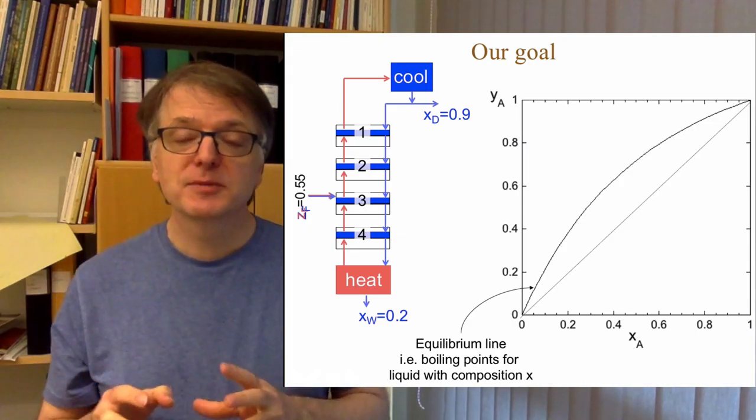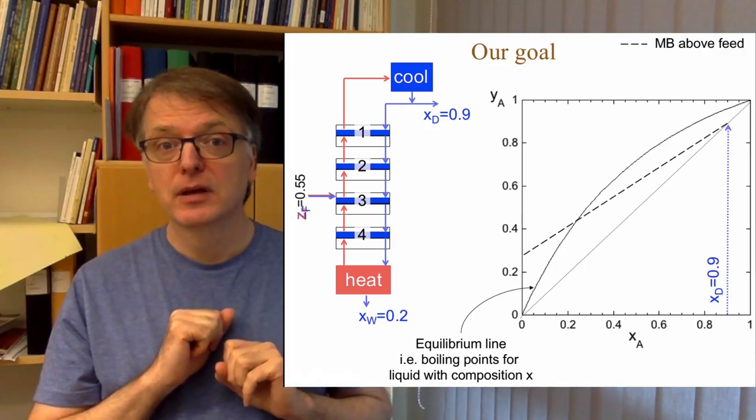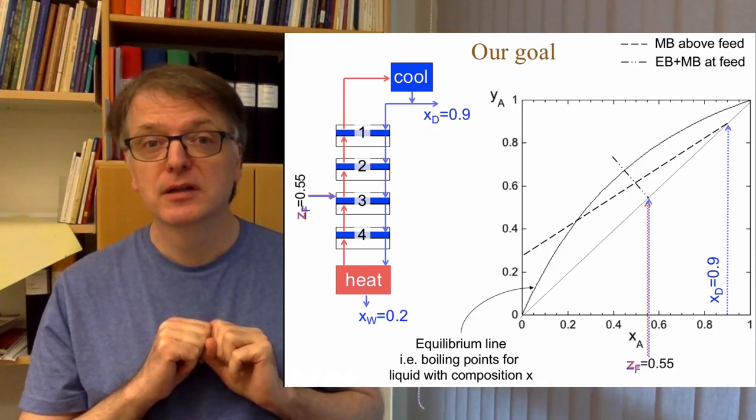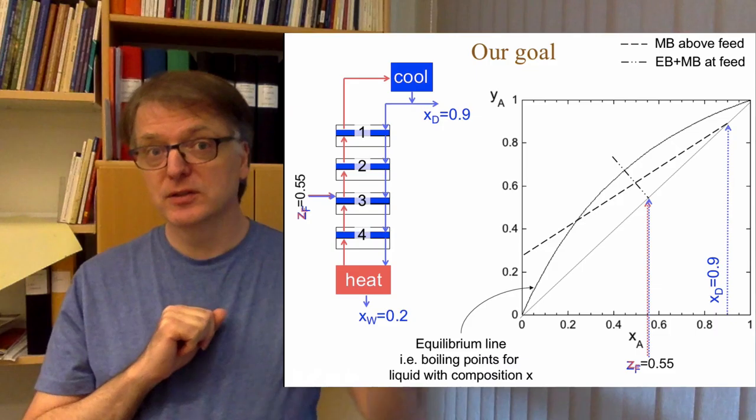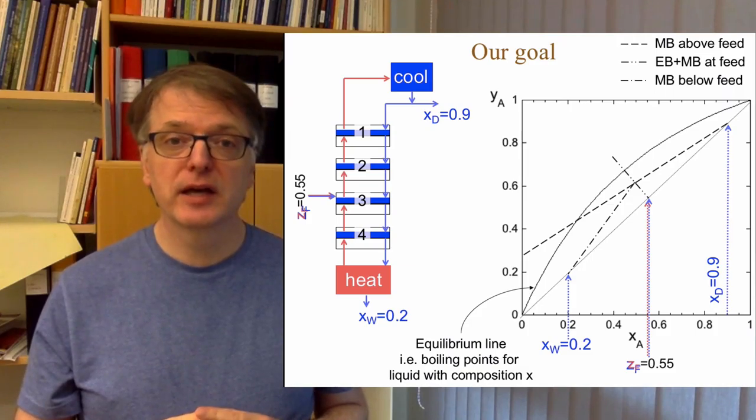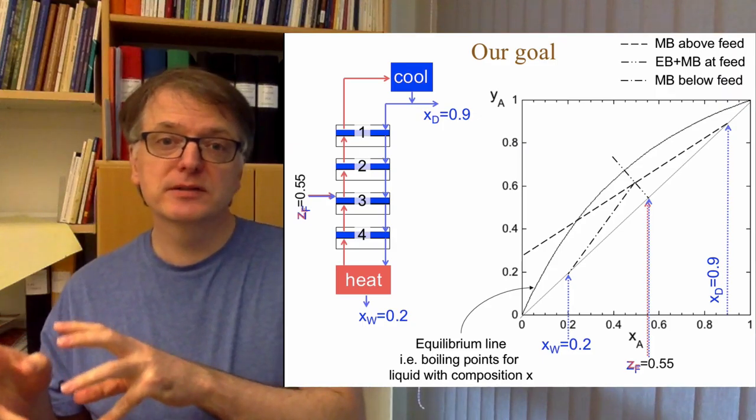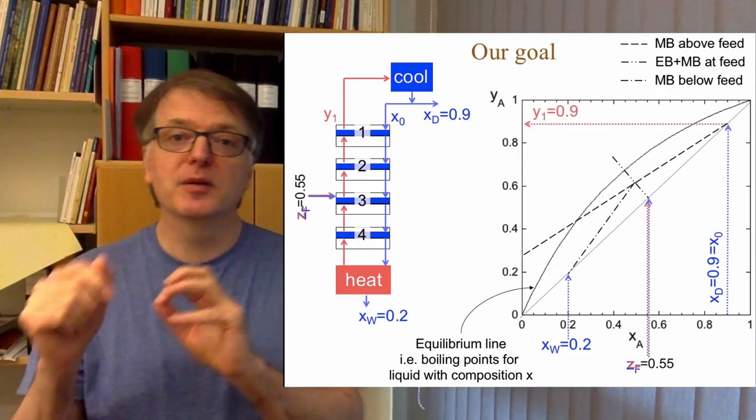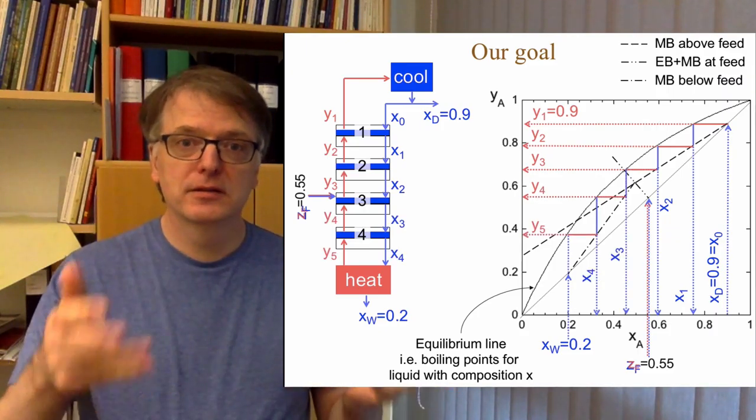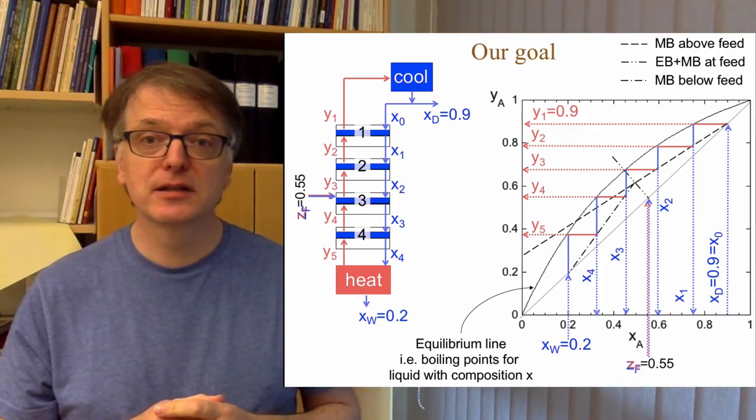Then we need to make mass balances. We need to make mass balances for what is above the feed, a mass balance for what happens at the feed, and mass balances for what happens below the feed. These will all look like lines in the XY diagram. That way we need to shift between making a mass balance, checking the equilibrium, making a mass balance, checking the equilibrium, back and forth. We can do that by drawing triangles like this in the XY diagram.